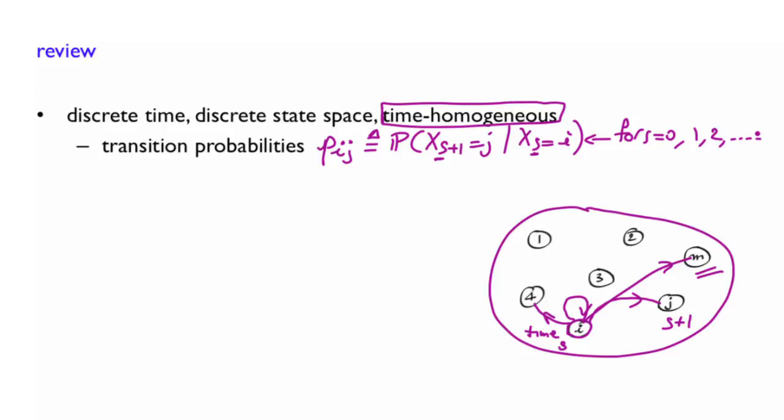So the defining feature of a Markov chain is the Markov property. And the Markov property essentially says that the past is not really important in order to predict the future as long as you know where you are now. Another way of saying it is that if you look at the probability of going next in state j, given that you are now in state i, and that I give you in addition